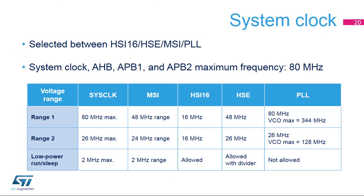The system clock is selected between the HSI-16, HSE, MSI, and PLL output. The maximum system clock frequency is 80 MHz, and the APB1 and APB2 bus frequencies are also up to 80 MHz. The maximum clock source frequency depends on the voltage scaling and power mode: the system clock is limited to 80 MHz in range 1, 26 MHz in range 2, and 2 MHz in low-power run and low-power sleep modes.